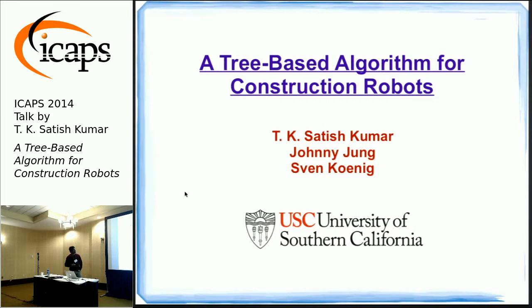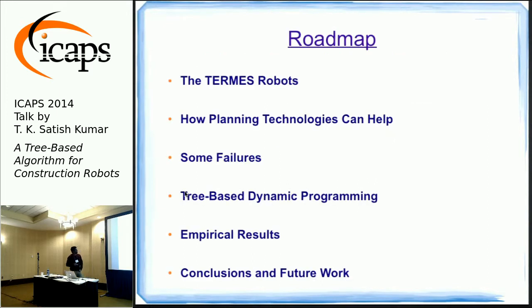This paper is about construction robots and a planning algorithm for them. Here's a quick roadmap: I'll begin by introducing the Harvard Termes robots, then speak about how this is a great example of what planning folks can do for robotics. I'll discuss some failures we encountered, how we revived planning using a novel tree-based dynamic programming algorithm, show empirical results, and conclude with future work.